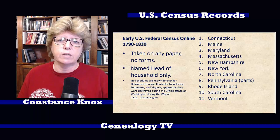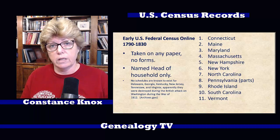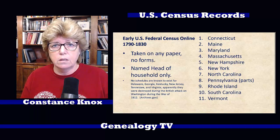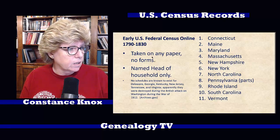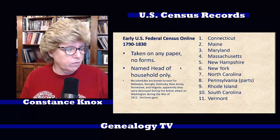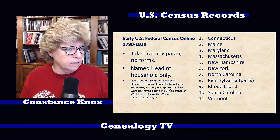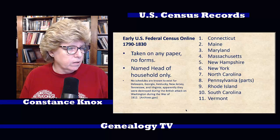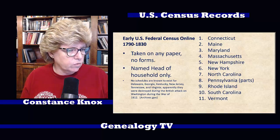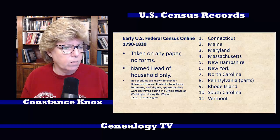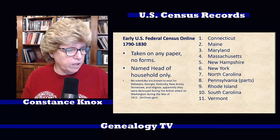In the early census records, 1790 to 1840, you can do this trick. These early census records were taken on pretty much any piece of paper — there were really no forms. The head of household was only listed, and there are no schedules that exist for Delaware, Georgia, Kentucky, New Jersey, Tennessee, and Virginia. Apparently these were destroyed during the British attack on Washington during the War of 1812.